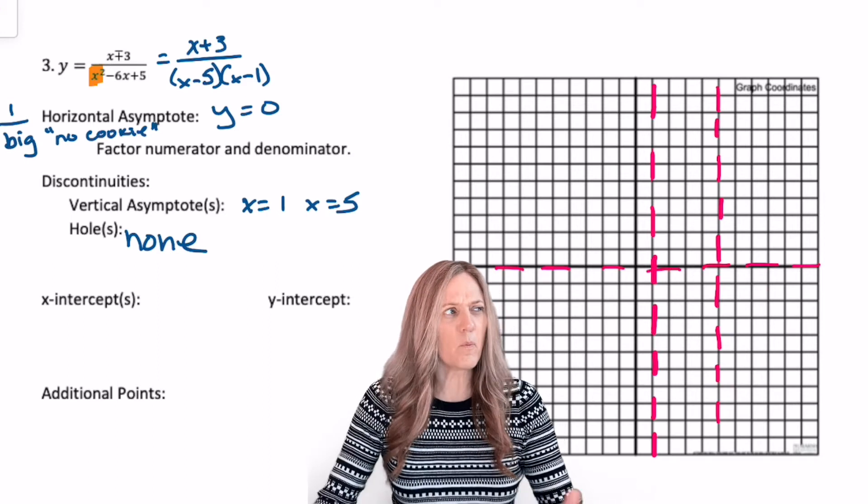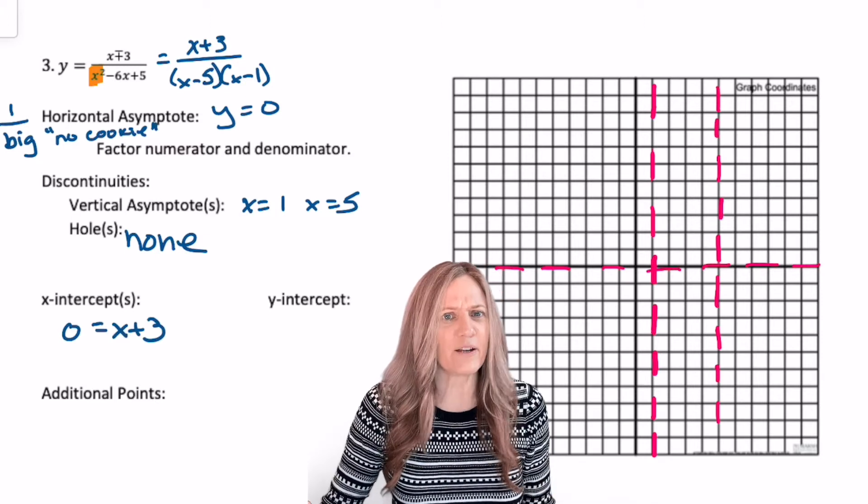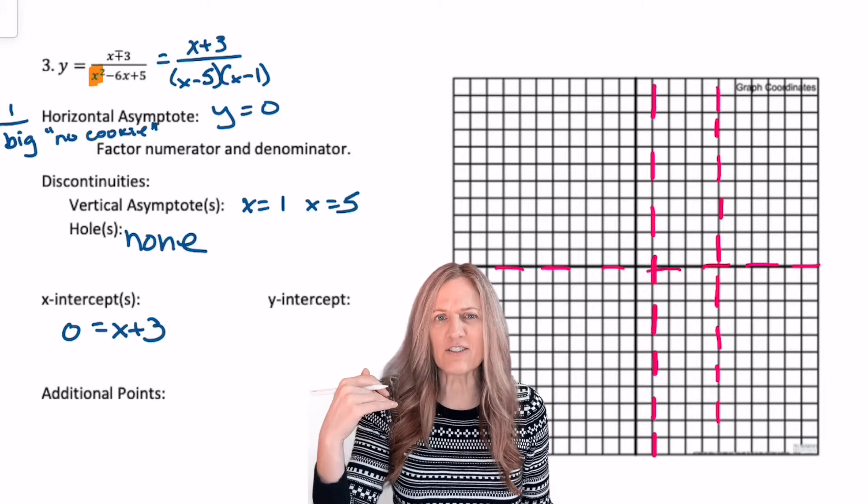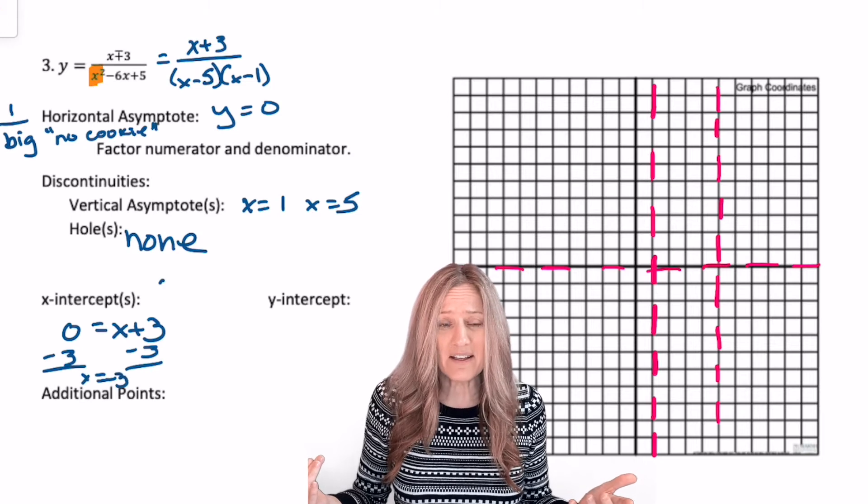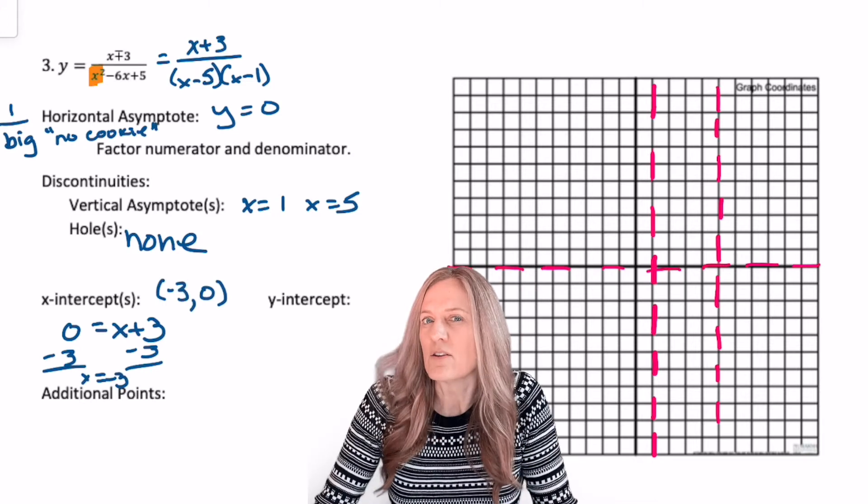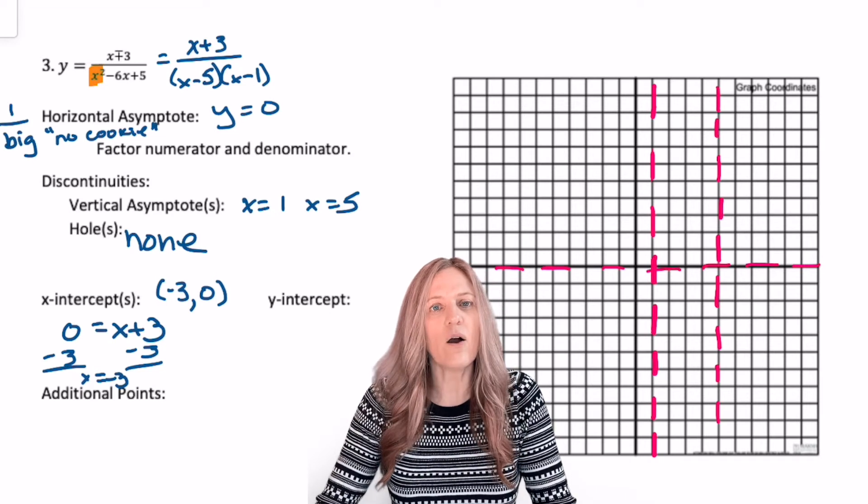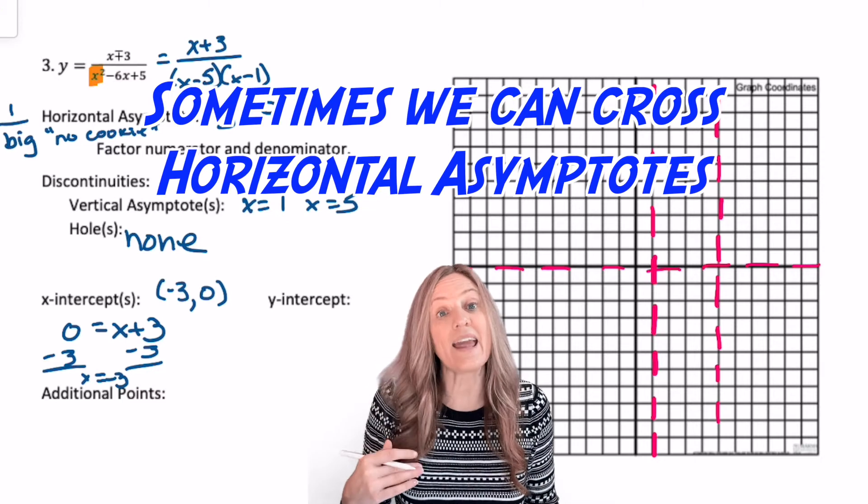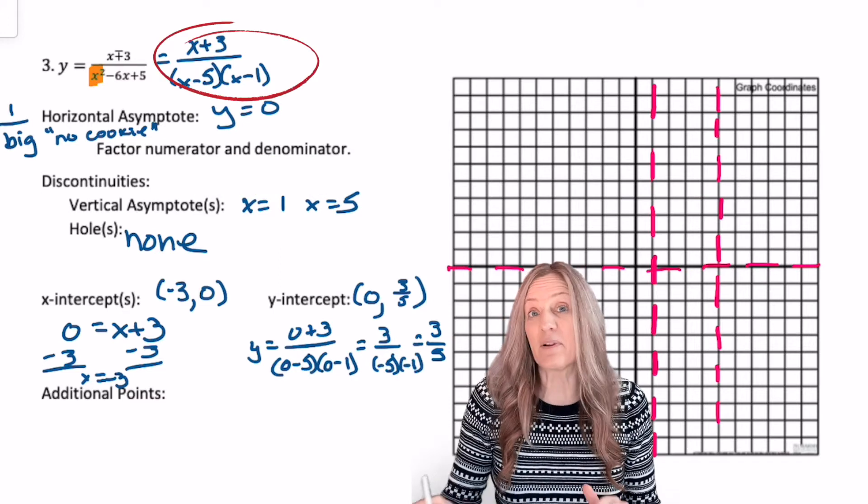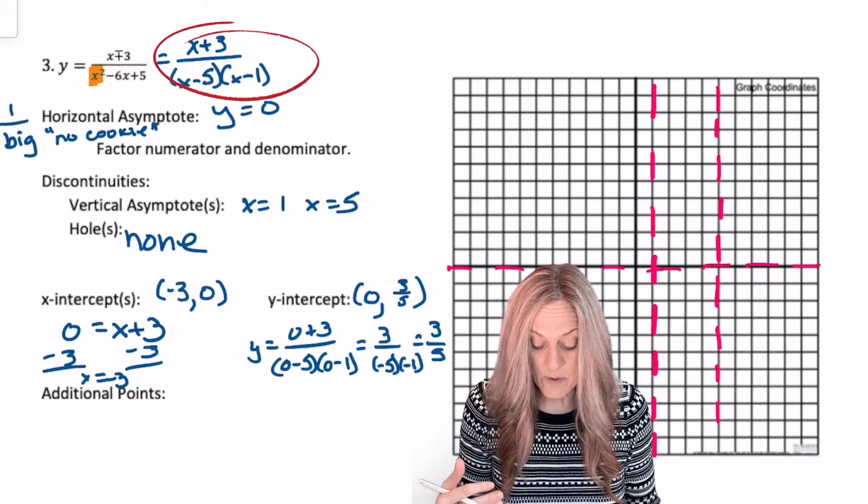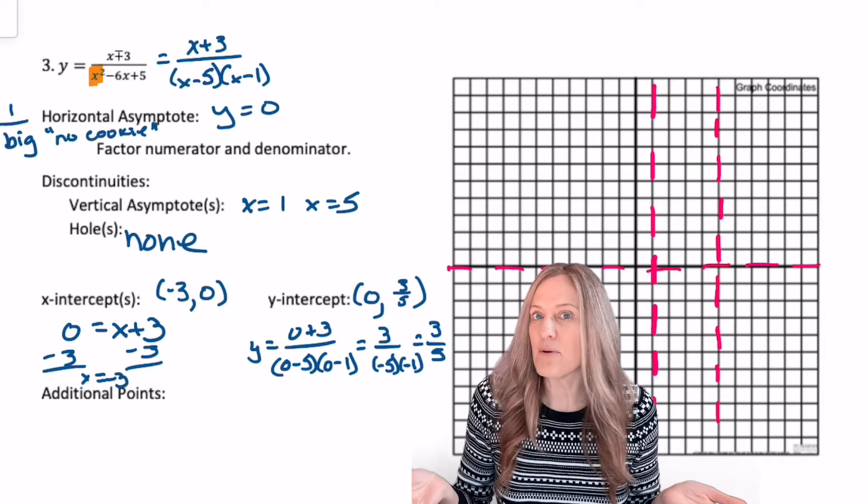X-intercept, y-intercept. Wait a second. I have a horizontal asymptote at y equals zero. There's no x-intercept. But wait, there is. I need the numerator of the fraction to equal zero. Zero equals x plus three. I guess we have an x-intercept at negative three. So we do have an x-intercept. But wait a second. The horizontal asymptote was at the x-axis. Oh, yeah. Sometimes we can cross horizontals, but we never cross verticals. Okay, y-intercept. I plug in zero for x and I plug that into our factored form. Shoot. It would have been easier to go into our standard form. Zero, three-fifths.